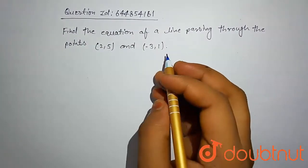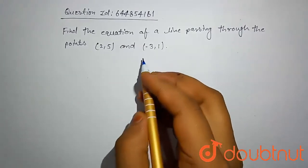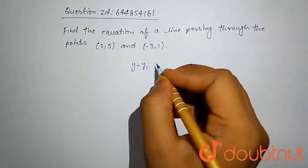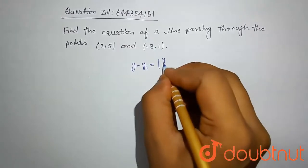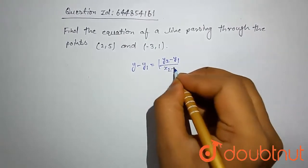We know the formula. If we know two points, then our straight line equation formula is y minus y1 equal to y2 minus y1 divided by x2 minus x1 into x minus x1.